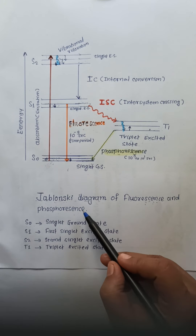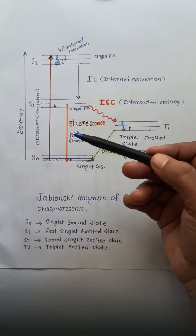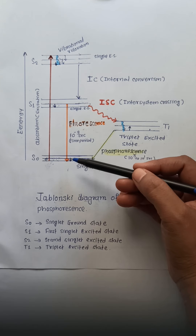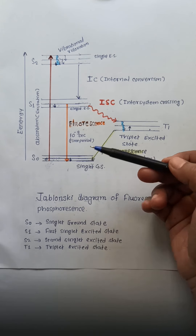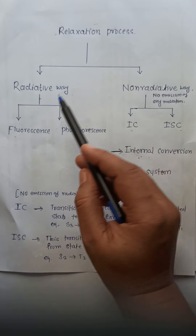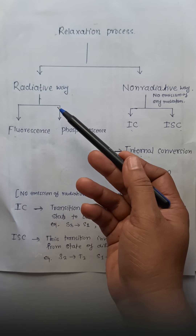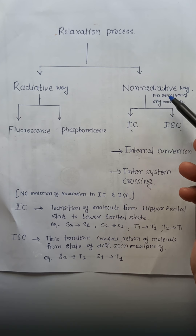As per the Jablonski diagram, there are multiple pathways by which the absorbed energy of a molecule can be released, and this is called relaxation. This relaxation mainly occurs in two ways: radiative and non-radiative. Radiative means there is an emission of radiation, which includes fluorescence and phosphorescence. Non-radiative means there is no emission of radiation.